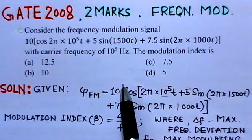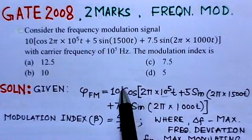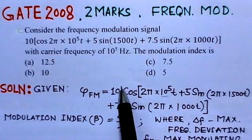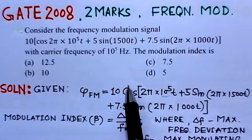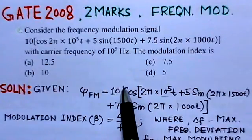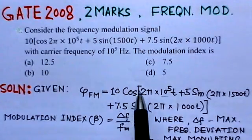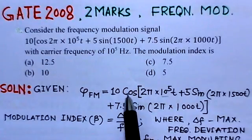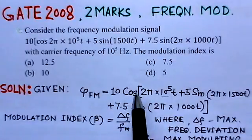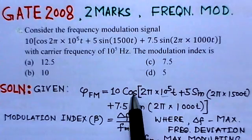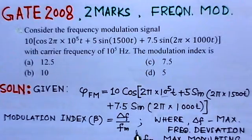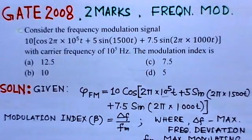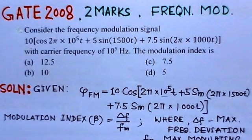This problem is on frequency modulation where the frequency modulated signal is given with the known carrier frequency and modulating signals. One has to find the modulation index. We will solve this problem step by step.